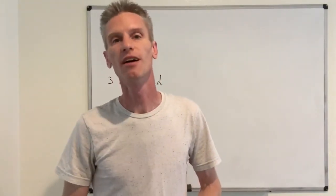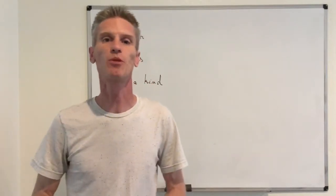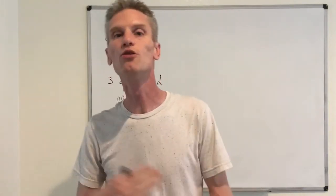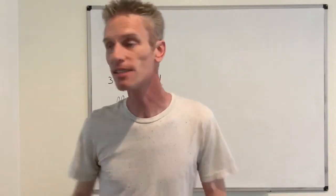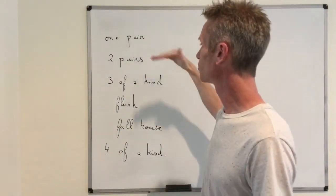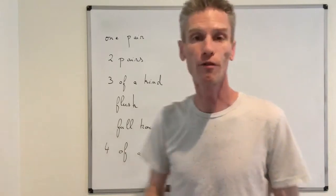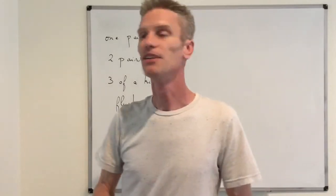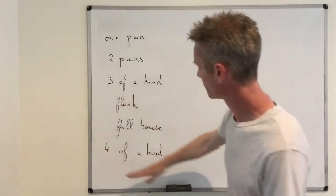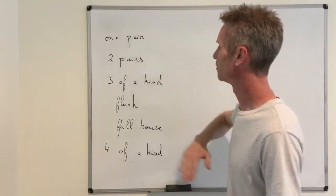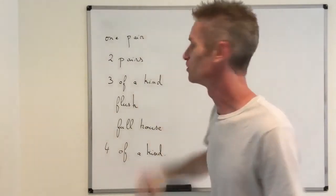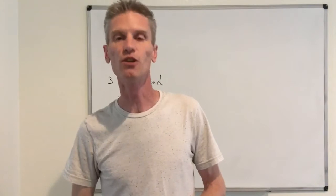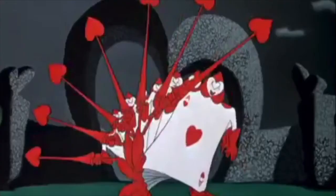Starting in this video with probably one of the most popular examples in probability, which is poker probabilities, where we are going to compute the probabilities of different events: one pair, two pairs, three of a kind, flush, full house, or four of a kind. These are the main ones, and they are ordered from the weakest at the top to the strongest at the bottom. We'll see that the probabilities keep decreasing, so everything is about counting the cards.